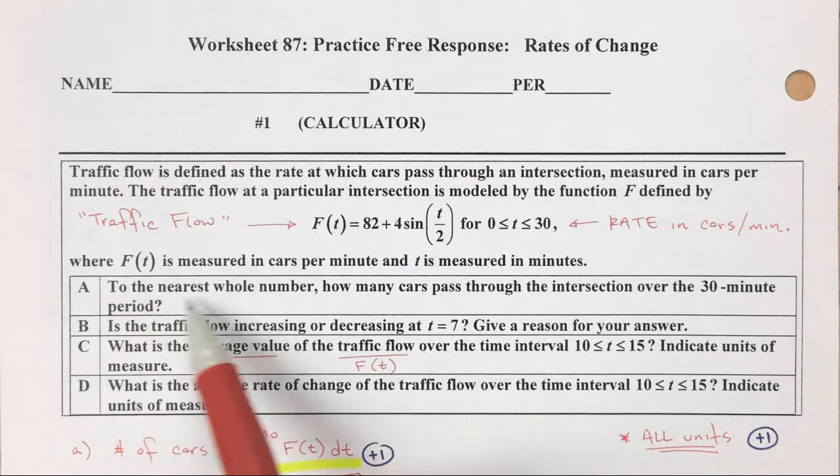And to the nearest whole number, how many cars pass through the intersection over the 30-minute period? So we want the total number of cars that go through that intersection over that 30 minutes from 0 to 30. If we want the total number of something using a rate, what we can do, because that rate is already a derivative, I want to go backwards to find my total.